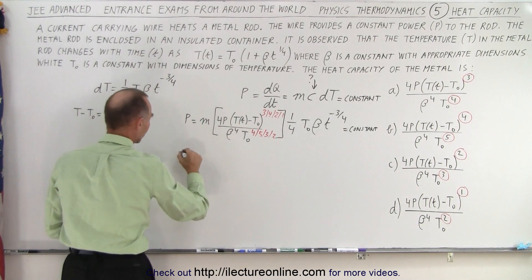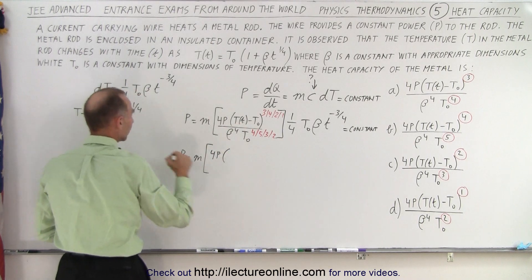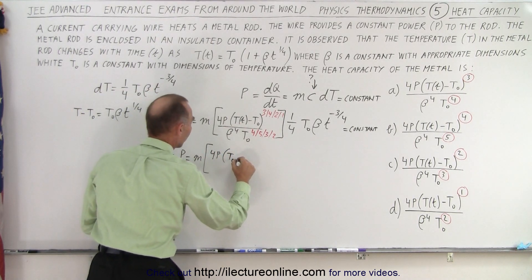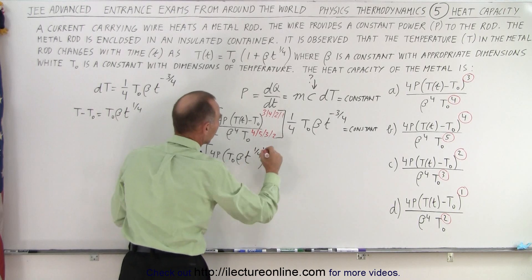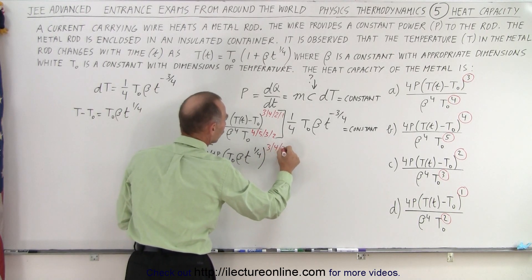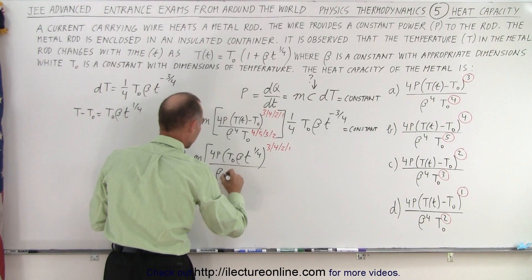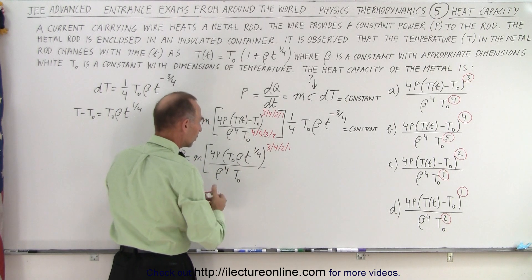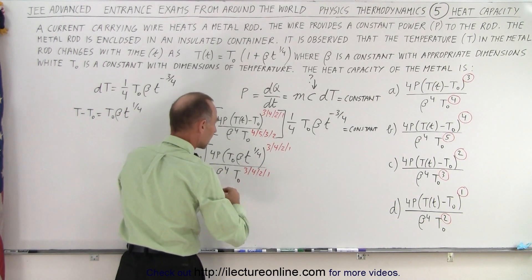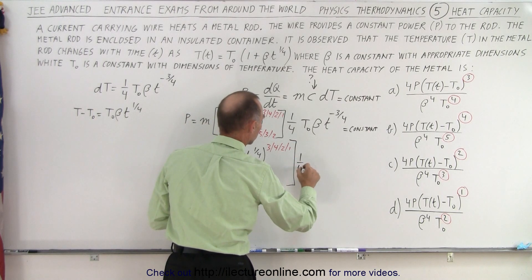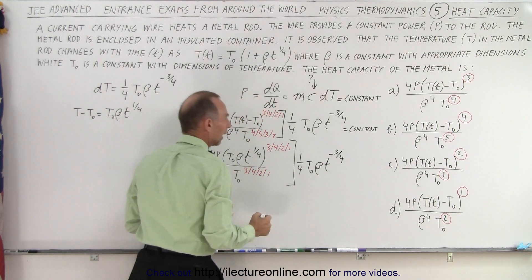So I can actually replace T minus T sub naught by this, which makes more sense. So P is equal to m times 4P times, instead of writing that, I'm going to write T sub naught beta t to the one quarter power, and now the exponents there become 3, 4, 2, or 1, and in the denominator we end up with beta to the fourth power T sub naught raised to the 3, 4, 2, and 1.